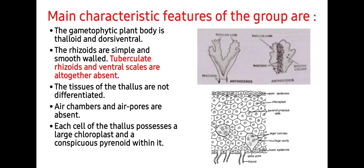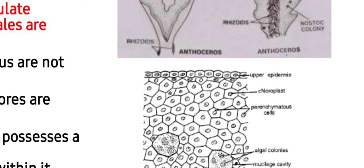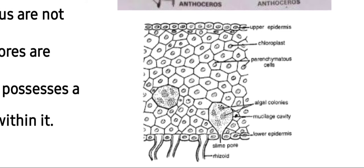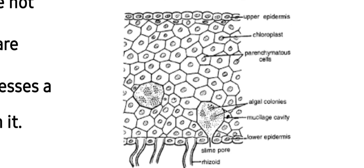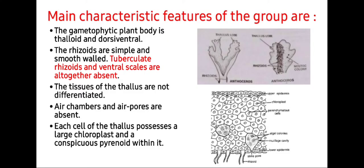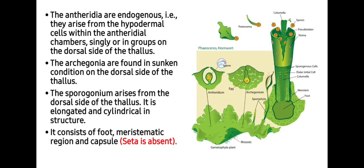Each cell of the thallus possesses large chloroplasts and a conspicuous pyrenoid within it. In some thalli, like in Anthoceros, you will also find a symbiotic association of Anthoceros with algae. The algal colonies, specially from the cyanobacteria, are present in the thallus.